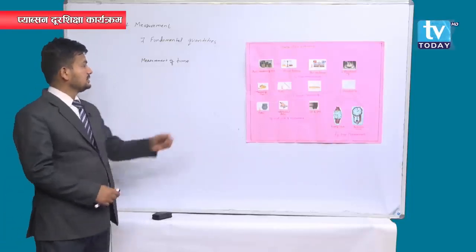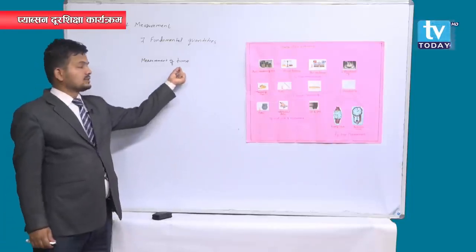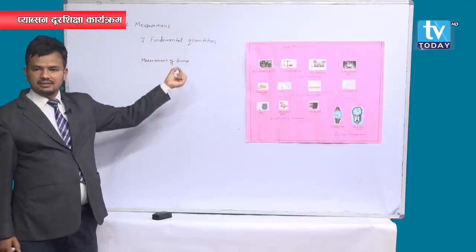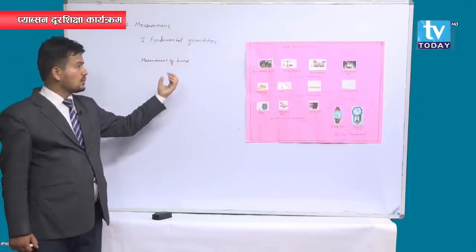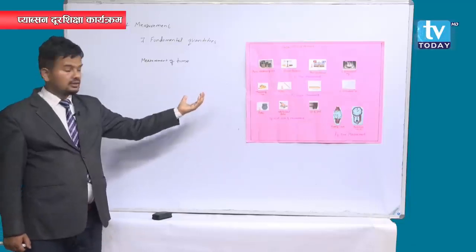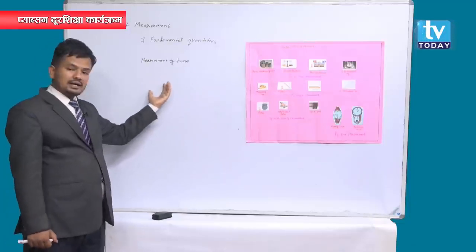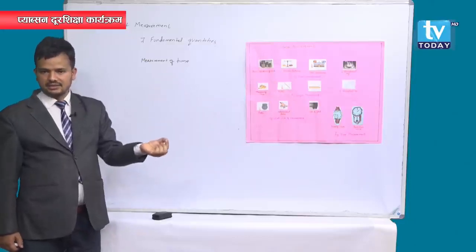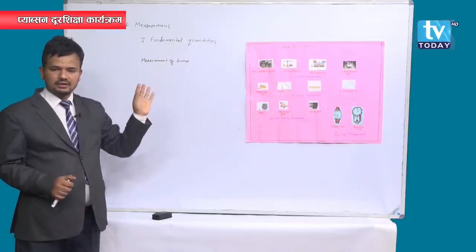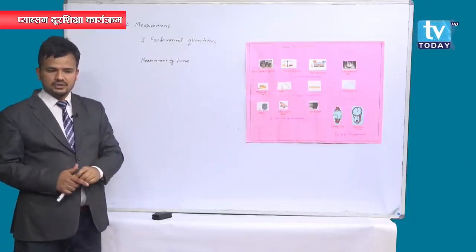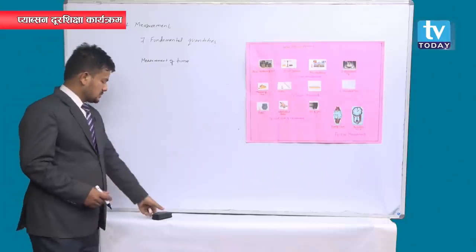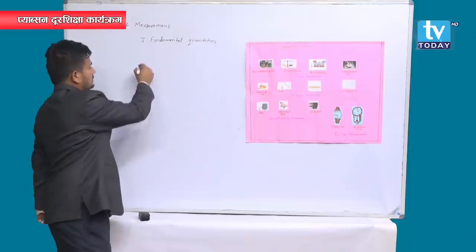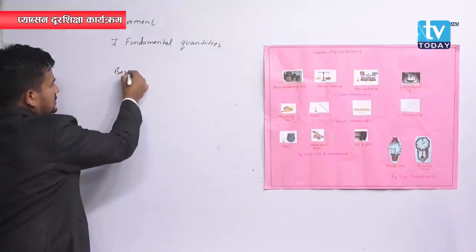One year has 365 days. One day has 24 hours. One hour has 60 minutes. One minute has 60 seconds. You have been learning this from junior classes.